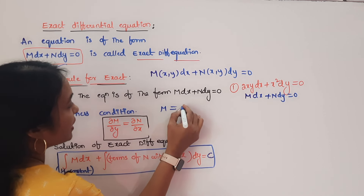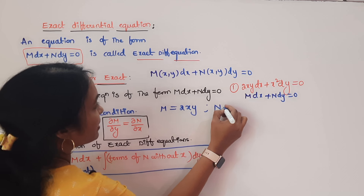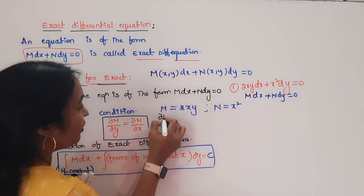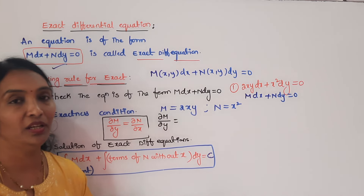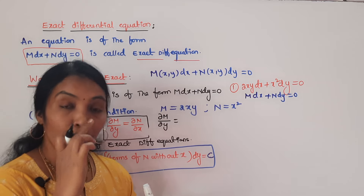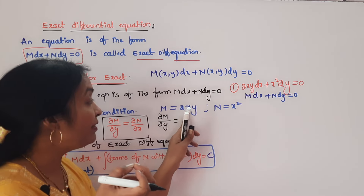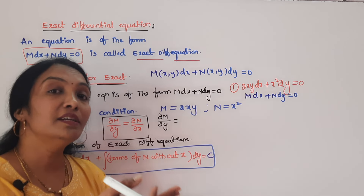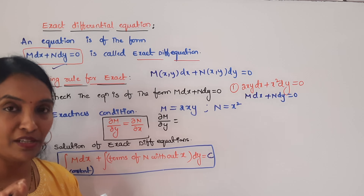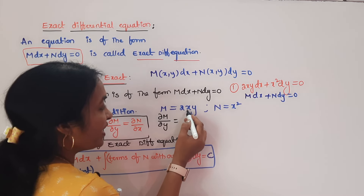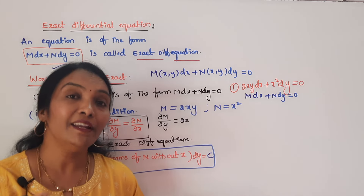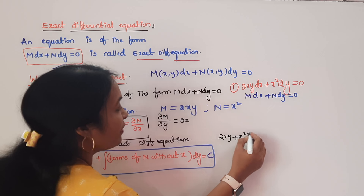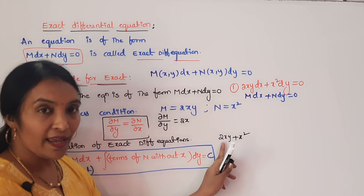The coefficient of dx is M, and the coefficient of dy is N. So M equals 2xy and N equals x². Now compute ∂M/∂y: differentiating M with respect to Y partially. When differentiating with respect to Y, any other variable is treated as constant. So for 2xy, 2 is constant and x is constant; differentiating y gives 1, so ∂M/∂y equals 2x.